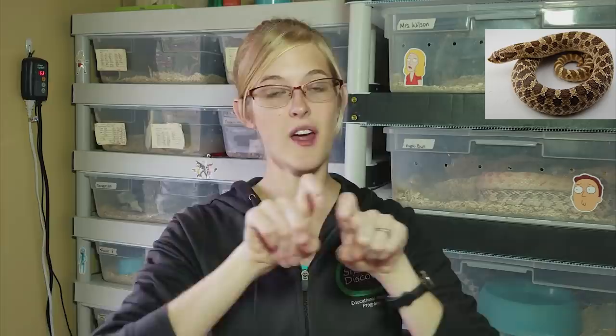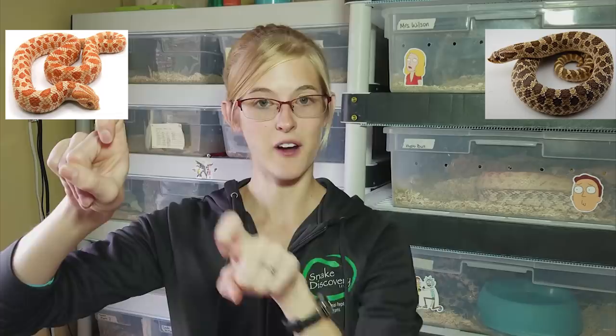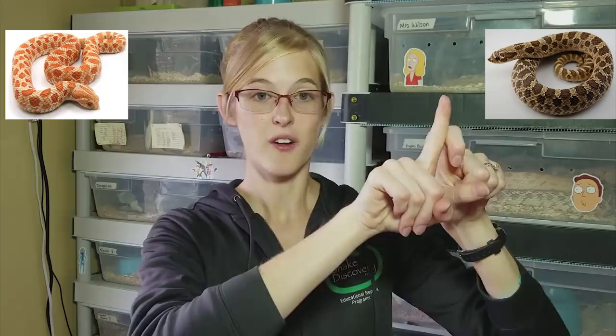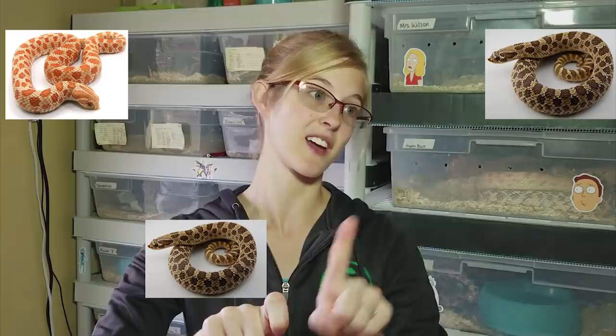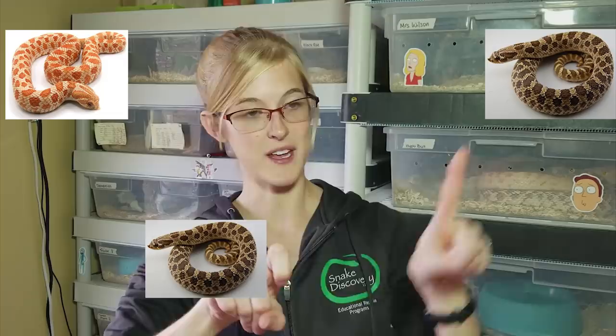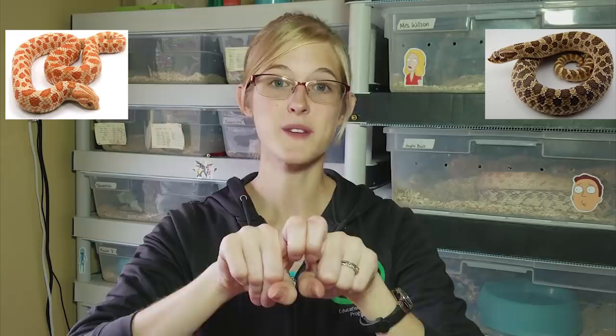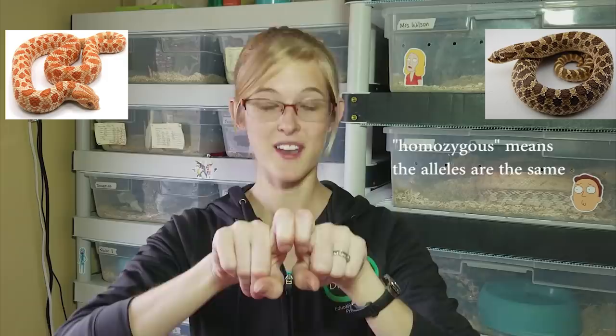This parent will split off an albino allele — it doesn't matter which one, they're both mutated for albinism. Our heterozygous albino snake, which looks normal but carries the albino gene, will either split off the normal allele, creating a het for albino baby, or it might split off its albino allele, which would pair with the albino allele from the other parent, and the baby would therefore be homozygous for albinism and would be an albino.